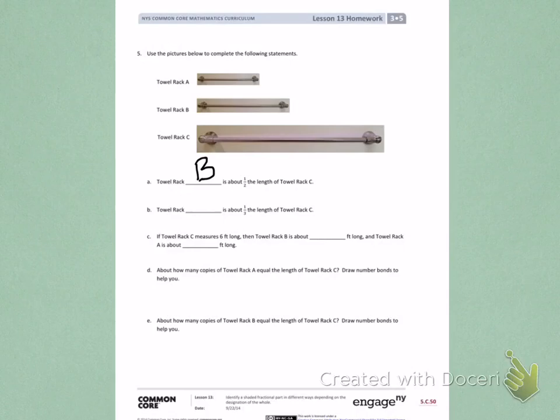Towel rack blank is about one third the length of towel rack C. Well, I know it can't be B because towel rack B is one half the length of towel rack C. My only choice is towel rack A.